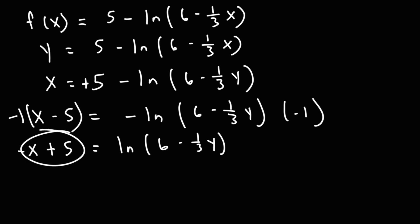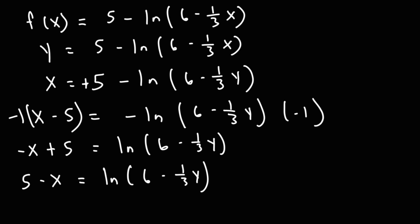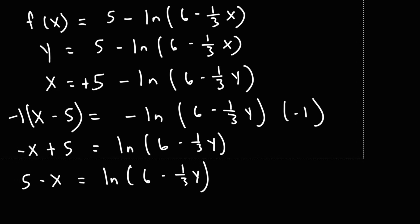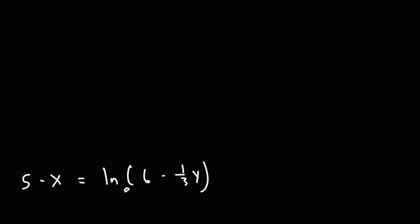Negative x plus 5 — if you switch the negative x and the 5, you can write it as positive 5 minus x, and these two expressions are equivalent to each other. So now at this point, we can change the logarithmic expression into its exponential form. e raised to the 5 minus x is going to equal what's inside of the log function, which is 6 minus 1 over 3y.